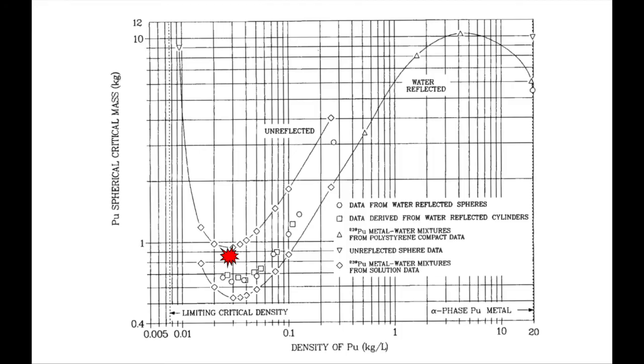The accident released 2 times 10 to the 17th fissions, but the operators actually didn't realize a criticality accident had occurred because there were no radiation detectors in this area and because the accident caused no mechanical damage. It wasn't until two days later when the worker who was standing next to tank 18 fell ill that they realized that a criticality accident had occurred. This worker received 1000 rad of dose and suffered from a severe case of acute radiation syndrome, but he actually survived the ARS.